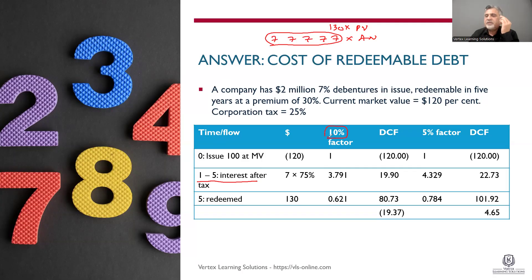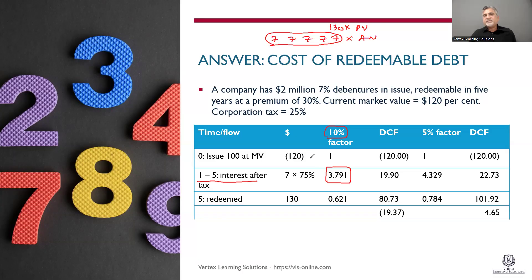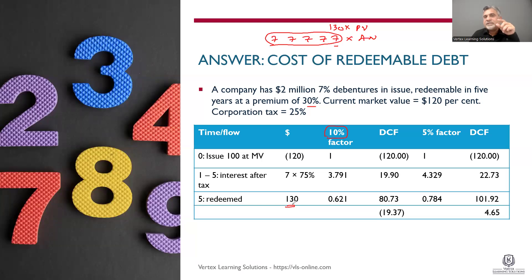There's no discount rate given, so we assume 10 percent. At a 10% discount rate, the annuity factor for five years is 3.791 — you can find this in the annuity tables given in exams and textbooks. At 10% the present value factor for year five is 0.621, taken from the present value table. So you have: year zero = 120 × 1; years 1–5 interest = 7 × 75% × 3.791; year 5 redemption = 130 × 0.621.